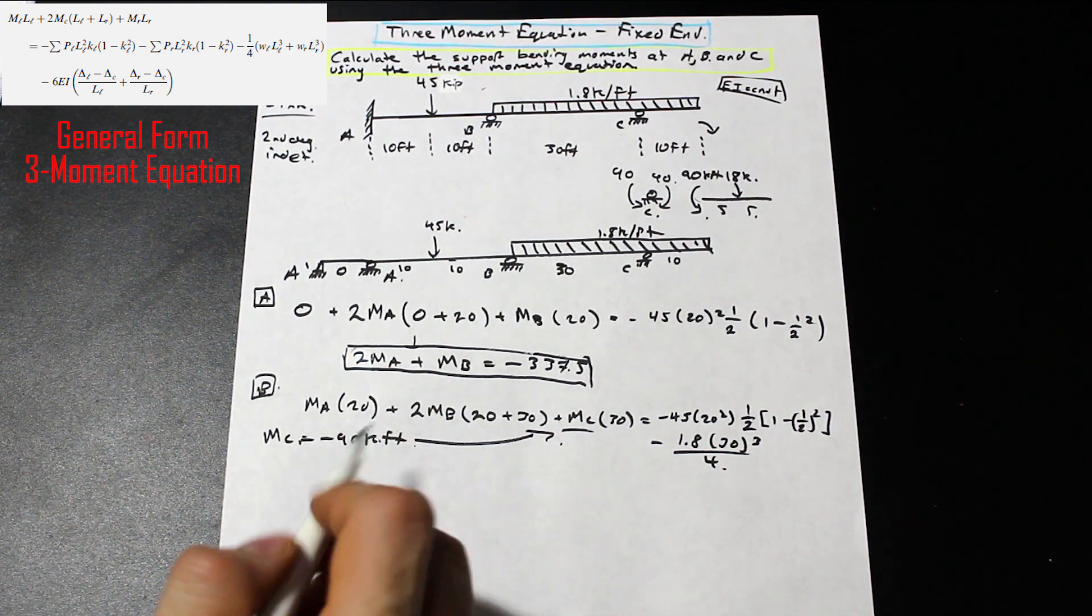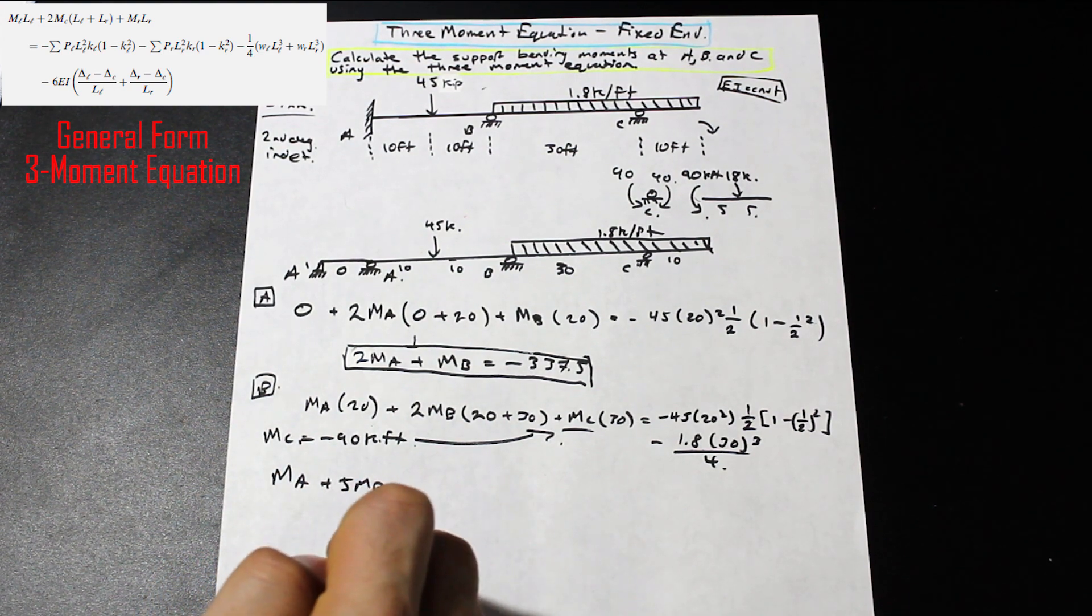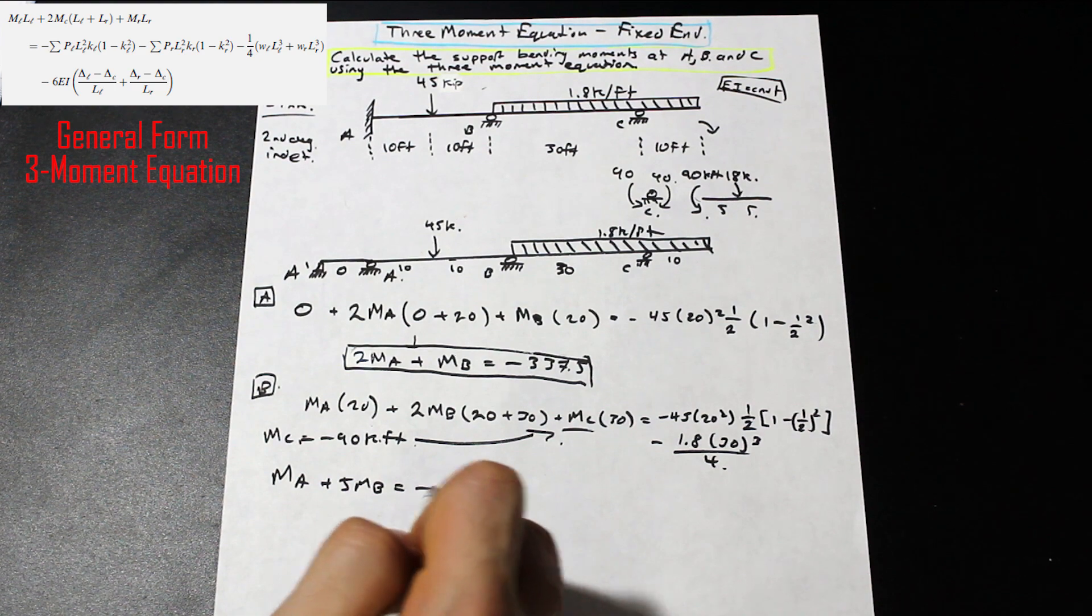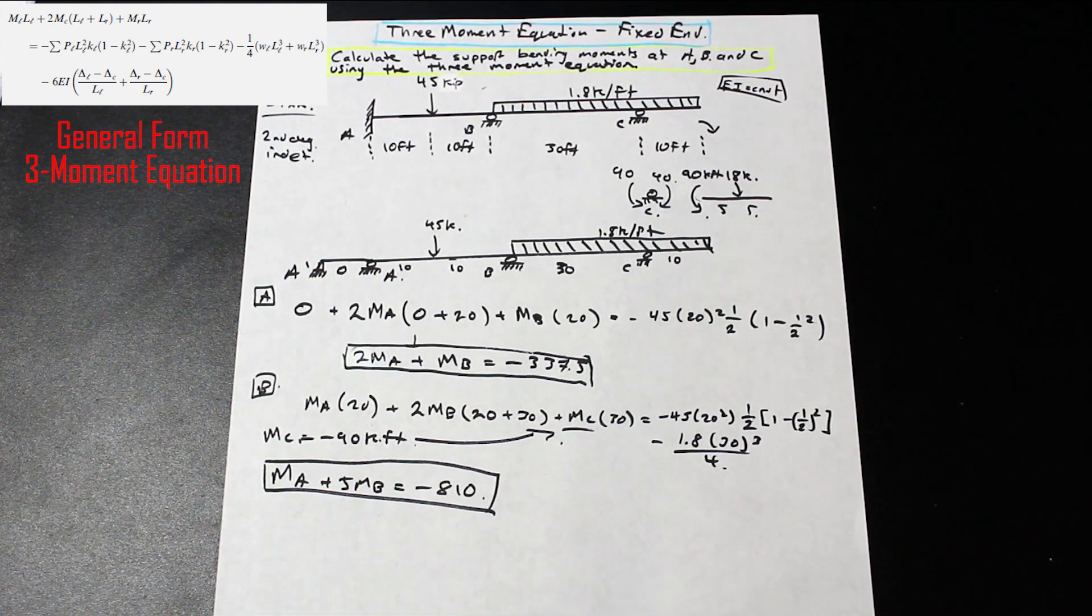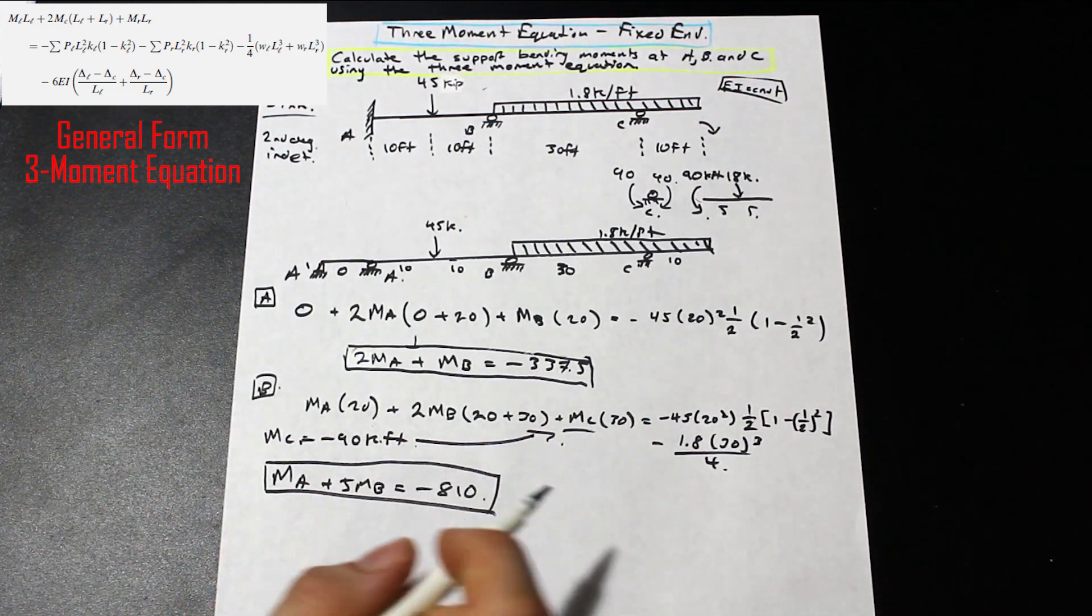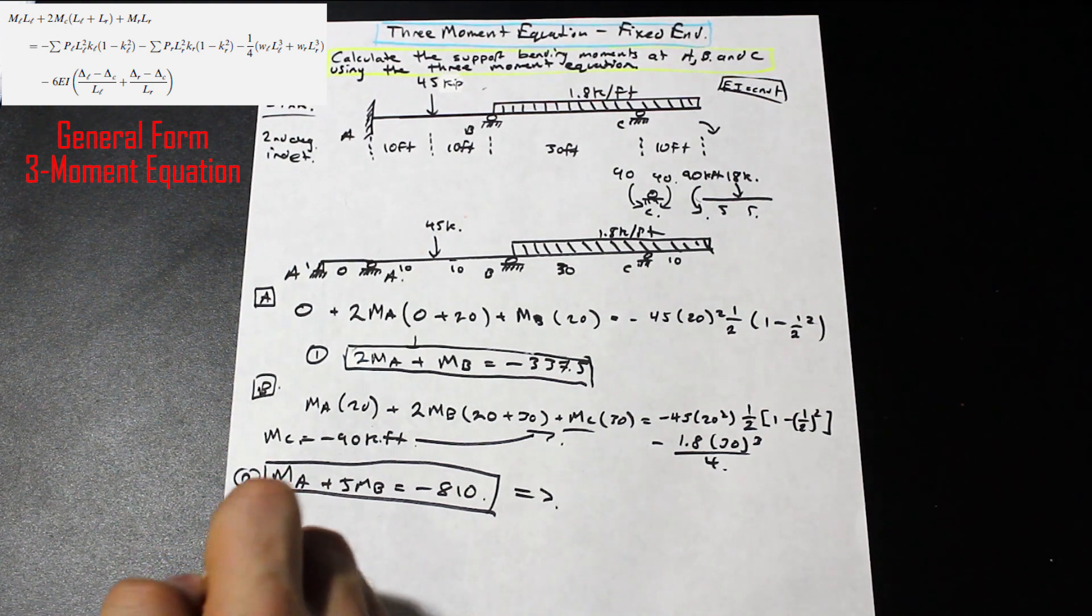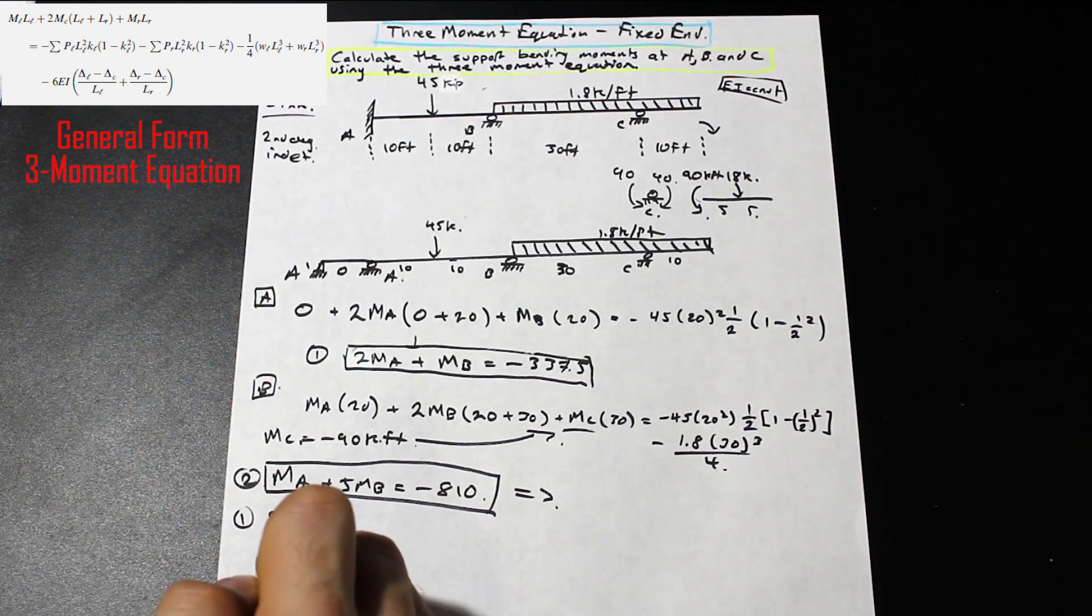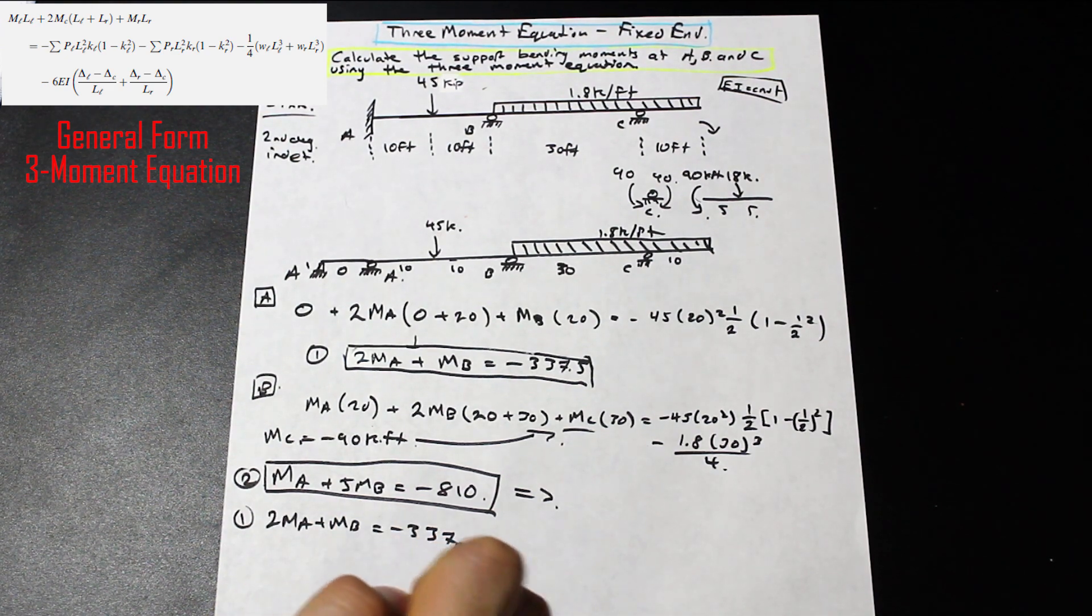And if we go ahead and reduce this equation, we are going to end up with MA plus 5 MB equals negative 810. Don't take my word for it, guys. Go ahead. Try and solve that on your own. In the interest of having a shorter video, though, I don't want to go through all the steps there. And so now we have our equation 1 and our equation 2. I'm just going to write equation 1 down here for you. 2MA plus MB equals negative 337.5.